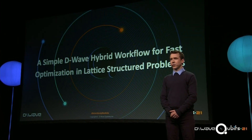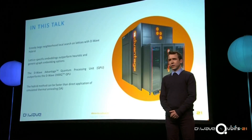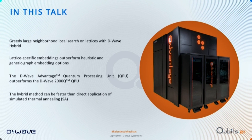I'll show how we can use the power of our quantum processor in hybrid workflows using an open-source method with the D-Wave hybrid framework, specifically for lattice-structured problems. The algorithm I'll show is a simple greedy method where the QPU does almost all the work. I'll show major advances from the D-Wave 2000Q to the Advantage processor, the importance of embeddings, and comparisons against competitor methods such as simulated annealing.